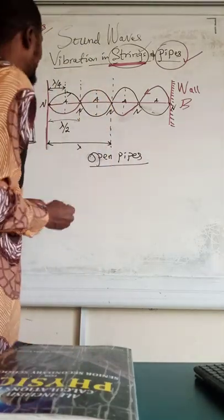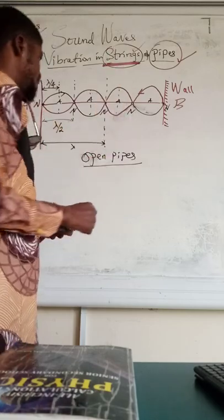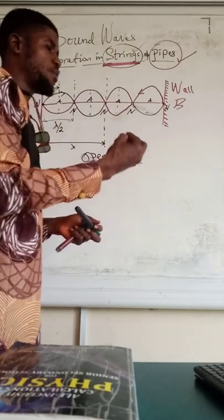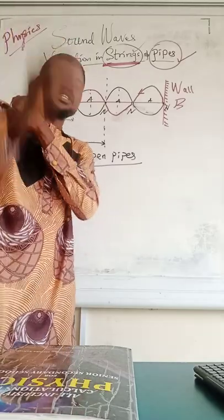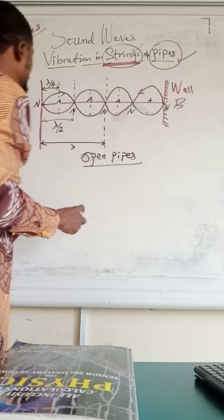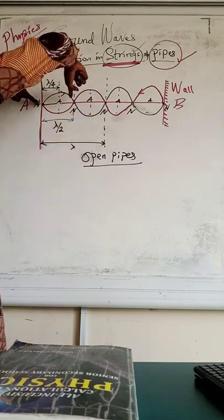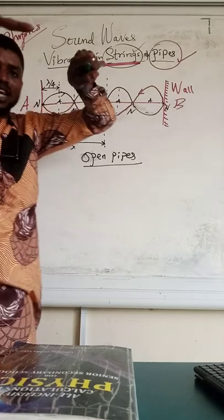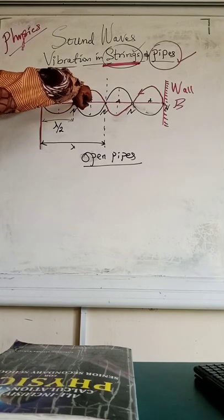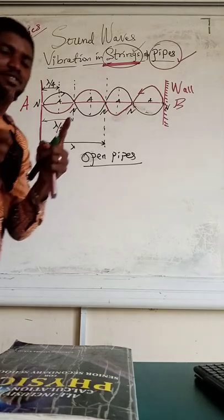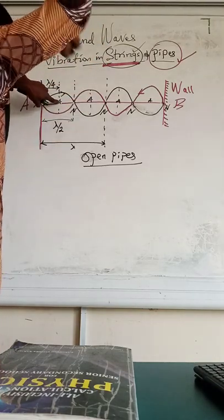For open pipes, look at this diagram. We start with the fundamental mode of vibration — the vibration in one single loop or one segment. For spring instruments, one loop is from here to here, just like we did before. For open pipes, one loop goes from this antinode to this antinode.